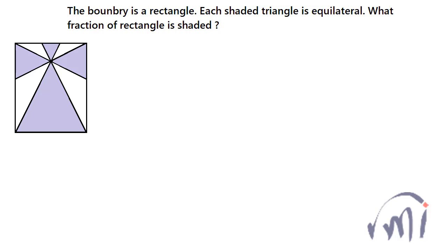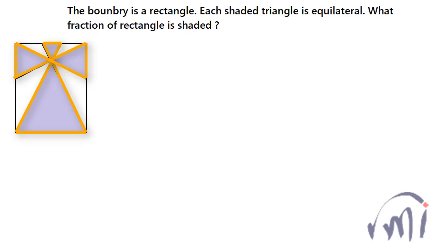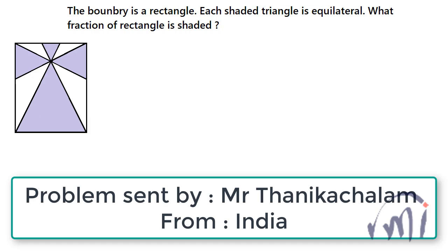Here we have a problem where, in the given figure, the boundary is a rectangle, each shaded triangle is equilateral, and we have to find what fraction of the rectangle is shaded. This problem was sent by Mr. Tanika Chalam from India. So how do we solve this problem?